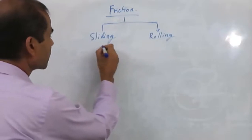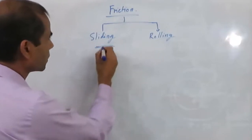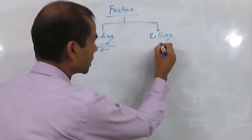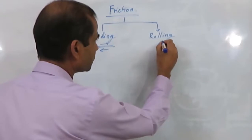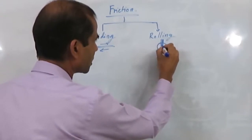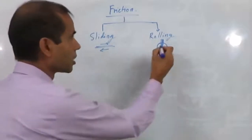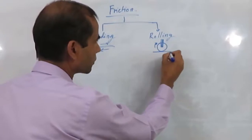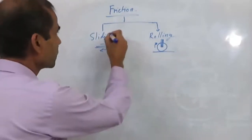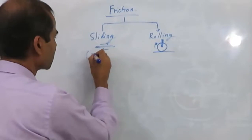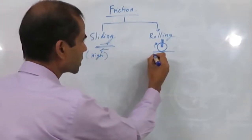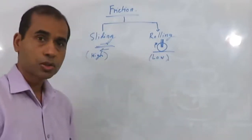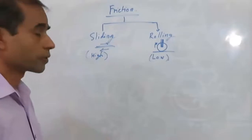Sliding friction is basically produced when two surfaces are sliding against each other, and rolling friction is experienced when a roller — like a wheel — is rolling over a surface. Sliding friction is high, and rolling friction is very low friction you can achieve. So these are the two types of friction.